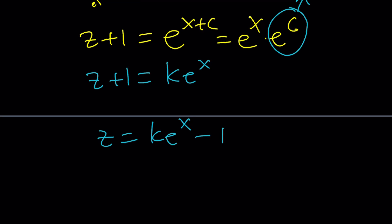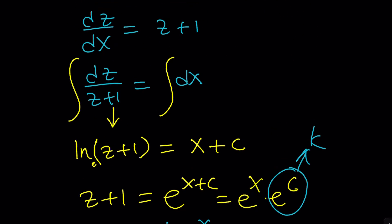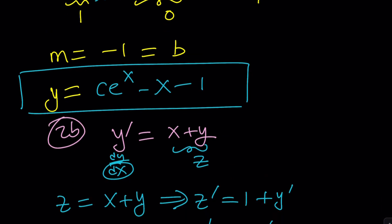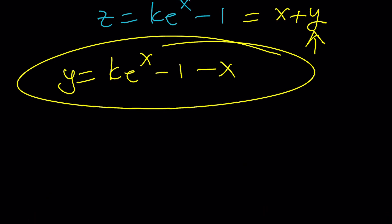Now it's a good time to back-substitute. Since z equals x plus y, we get x plus y equals k·e^x minus 1, so y equals k·e^x minus 1 minus x. Comparing this to method 2a — which gave c·e^x minus x minus 1 — it's the same thing; x and 1 can be switched around. So method 2b confirms the same general solution.